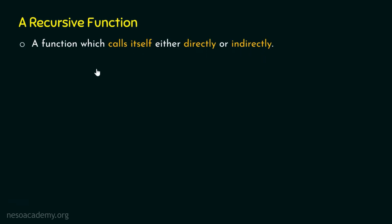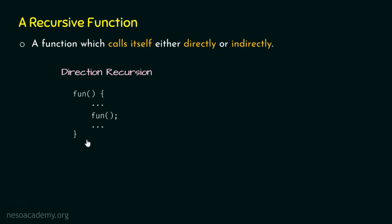There are two types of recursion. The first is called direct recursion. In direct recursion, the function calls itself directly. The function 'fun' is calling itself within its own body, as we can observe here. So this is direct recursion because this function is calling itself within its own body.